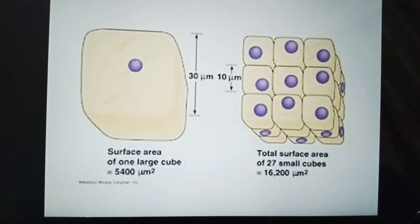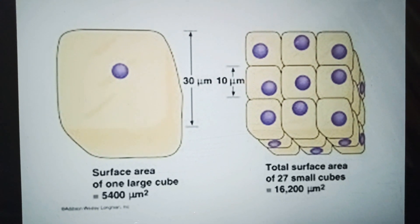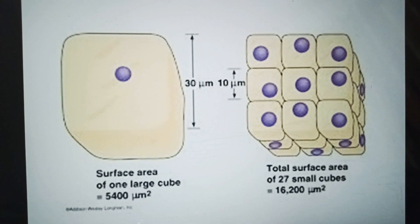Here the need of nutrients and the rate of waste production are directly proportional to cell volume.